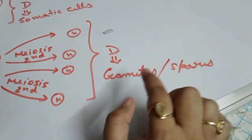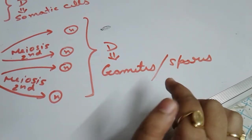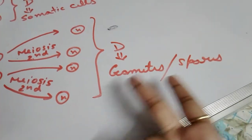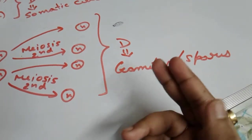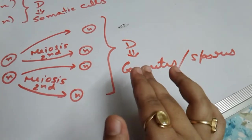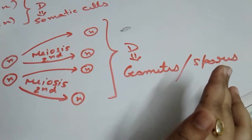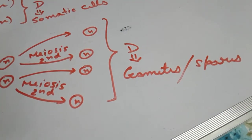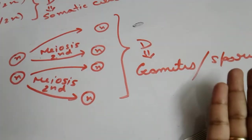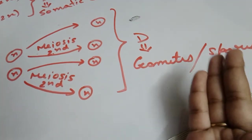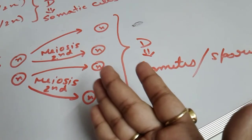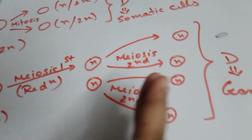Meiosis one and meiosis two take place for gametes or spores, because gametes and spores are haploid in nature. They fuse and produce a diploid zygote after fertilization. Meiosis is important because the haploid gametes and spores are produced, and after fertilization the zygote must be 2n or diploid. To maintain that, meiosis one and meiosis two take place.